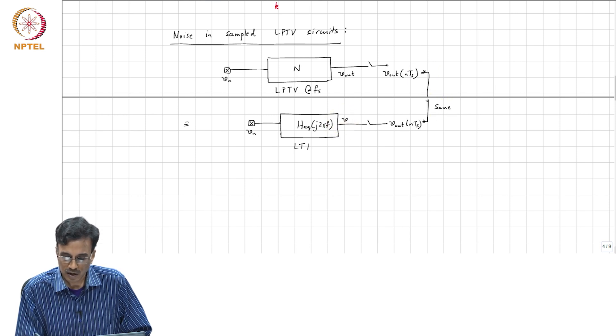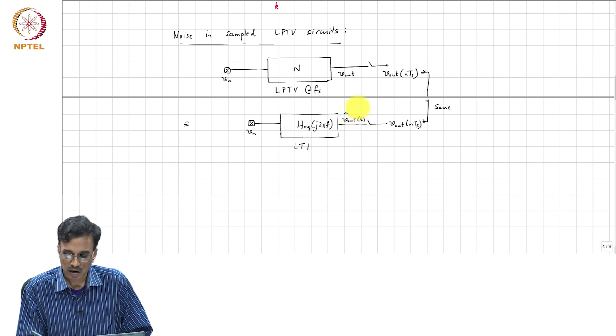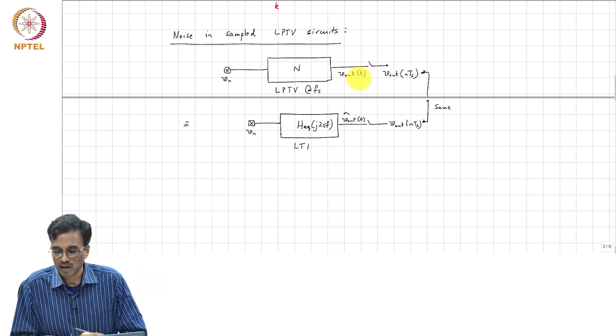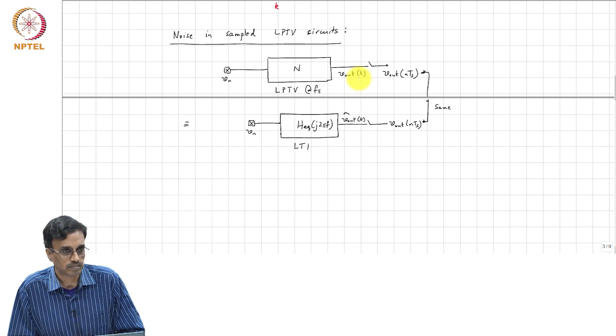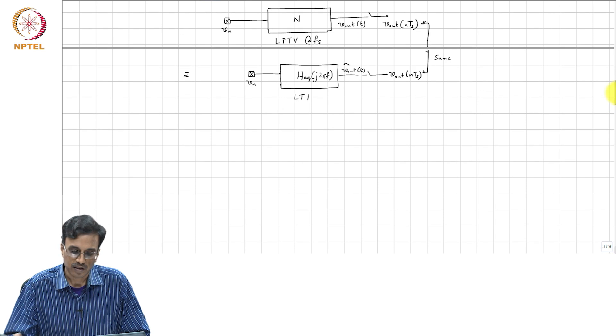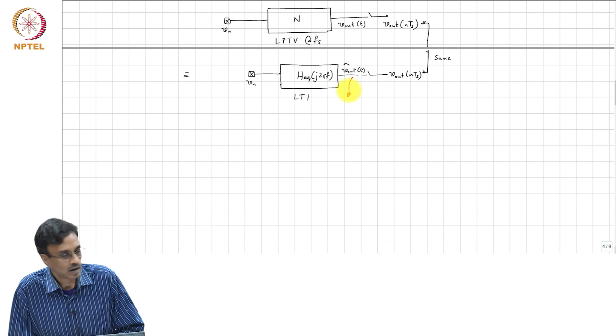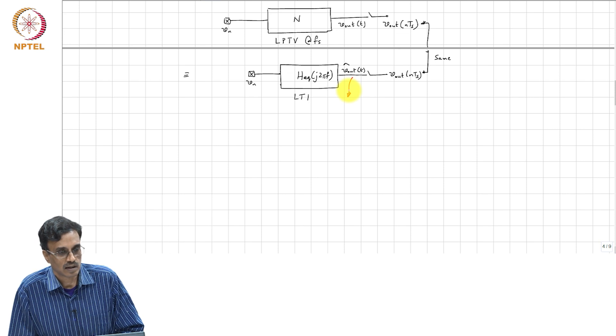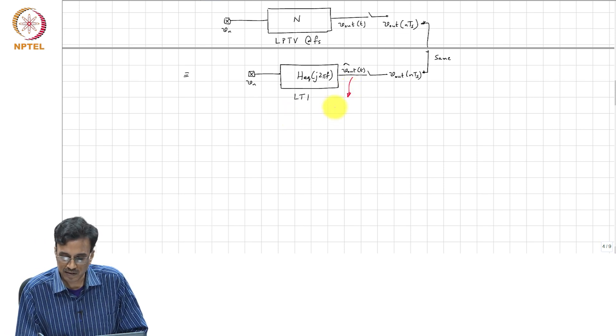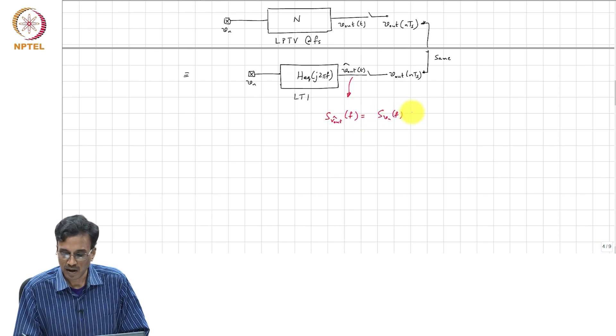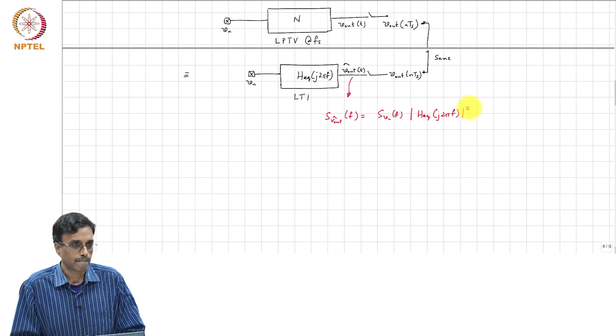But the waveform here, V_out hat is not necessarily the same as V_out, but the sample sequences are. So, this is easy. What comment can we make about the noise spectral density there? Very good. This we already know because the noise spectral density there, S_V_out_hat of F, is nothing but S_V_N of F times mod H_equivalent of J 2 pi f whole square.